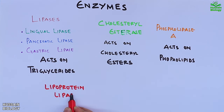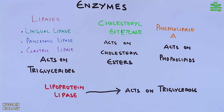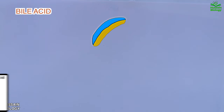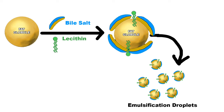We also have lipoprotein lipase, which acts on triglycerides in the blood circulation and converts them into fatty acids and glycerol — this process happens after absorption. We also have an important acid in this process called bile acid or bile salt, which helps in emulsification of lipids. Bile acids have a detergent action on lipid droplets, breaking big fat droplets into minute emulsification droplets, thus increasing the overall surface area for enzymatic activity.